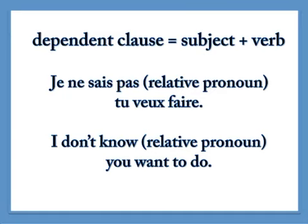I'd like to show you the purpose that relative pronouns serve both in French and in English. Je ne sais pas, [relative pronoun], tu veux faire. It's like in English — we need a relative pronoun to connect 'I don't know' and 'what you want to do.' Imagine how it would sound if I said, 'I don't know you want to do' — we're missing something, right? The relative pronouns can be translated as 'what' or 'that.' So we'd say, 'I don't know what you want to do.' I'll show you which relative pronoun you'd need to complete that sentence in French in just a minute.